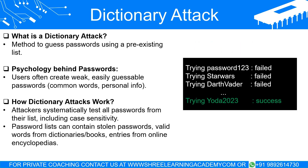How Dictionary Attacks Work. The list used in a dictionary attack often includes stolen passwords, valid words from dictionaries or books, entries from online encyclopedias, and even combinations based on the target's personal information. This means that if the target person has a habit of using their dog's name as their password, and this name happens to be in the list, then the attacker has a high chance of cracking the password.